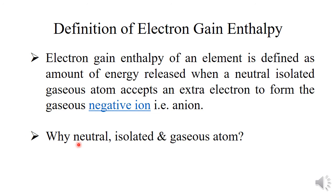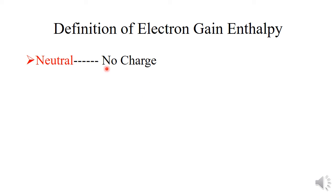Why should the atom be neutral, isolated, and gaseous during the addition process? First is neutral — that means no charge. During the addition process, the atom should have no charge because it is easier to add an electron to an atom which has no charge rather than an atom which has some charge, either positive or negative. So the atom should be neutral.